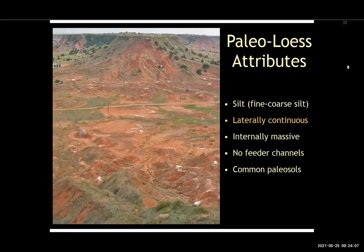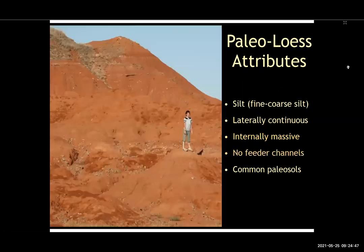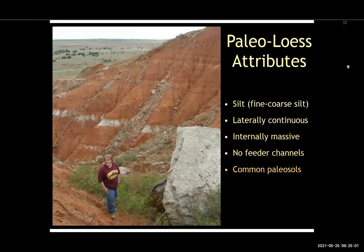Another attribute is that these tend to be laterally continuous — you can't really see any channels. Because dust falls out of the atmosphere from suspension and is not saltated the way eolian sand is, it tends to form internally massive units. The bedding is really formed by the intervening paleosols in a true loess deposit. For example, in the Maroon Formation the beds were up to eight meters thick and internally massive, fracturing conchoidally like a piece of obsidian. There's also an absence of feeder channels — they look for all the world like floodplain deposits except you can never find the fluvial channel. And then common paleosols — you can see some paleosol horizons in the background in this loess deposit.